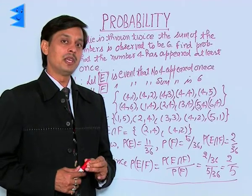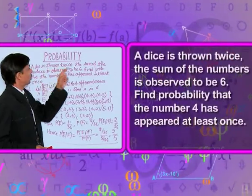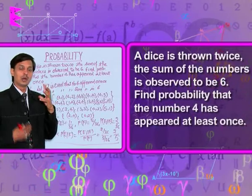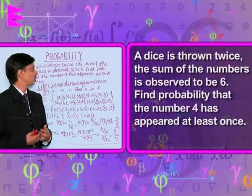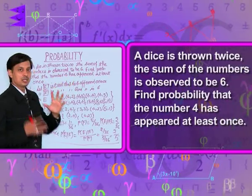Now, one more problem based on conditional probability. A die is thrown twice, or you can say a pair of dice is thrown. The sum of the numbers is observed to be 6.